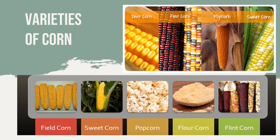Flint corn is known for its hard outer layer which protects the small, soft, starchy inside of the kernel. This hard outer layer is said to be as hard as flint, hence the name. They have a glassy appearance and can also be puffed when heated, but often the kernels will crack open rather than explode. For flour corn, varieties come in all colors; the color is contained within the thin outer layer, while the interior soft starch is white.